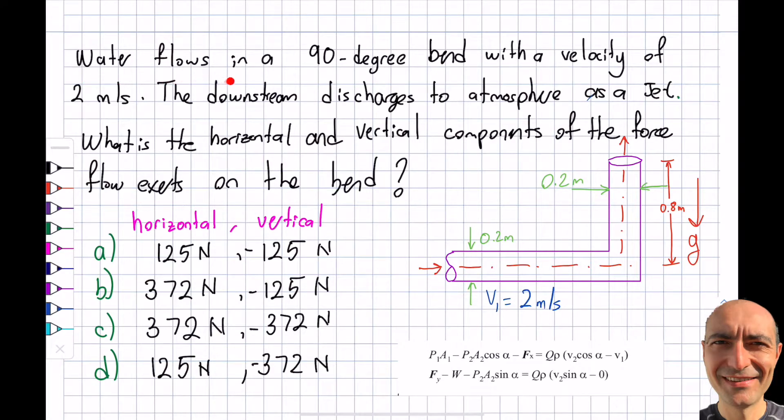Here's what it says: water flows in a 90-degree bend with a velocity of 2 meters per second. The downstream discharges to atmosphere as a jet. You can see downstream is over here and I'm stating that the pressure gauge-wise is going to be 0 pascals. Please read the question very carefully. The question is asking what are the horizontal and vertical components of the force flow exerts on the bend. I gave you the options over here so you can go over it.